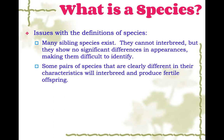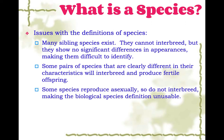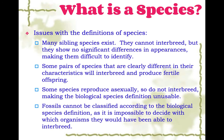There are some pairs of species that are clearly very different in their characteristics — they look very different — but they can interbreed and produce fertile offspring. A major issue is that some species reproduce asexually; they don't interbreed at all, so the biological species definition is totally unusable for things like bacteria. And with fossils, you can't classify them according to the biological species definition because it's impossible to decide which organisms they would have been able to interbreed with — they're not alive. So there are some difficulties with defining a species.